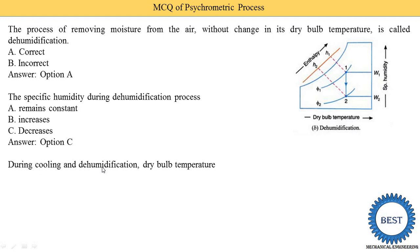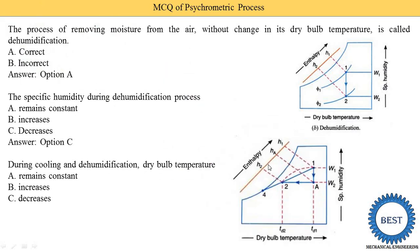During cooling and dehumidification, does dry bulb temperature remain constant, increase, or decrease? Here two processes are combined. When cooling is present, dry bulb temperature decreases — you don't need the graph for this basic understanding. So option C — dry bulb temperature decreases — is the correct answer. Similarly, if the MCQ asks about heating and humidification, dry bulb temperature by default increases during heating.